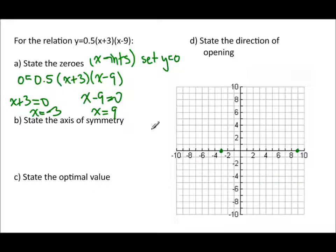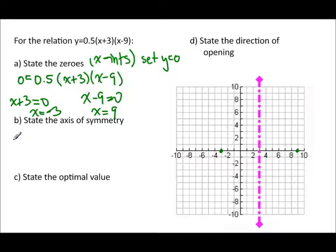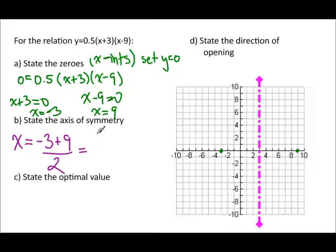Now for the axis of symmetry — the axis of symmetry is always between the two zeros. It's a vertical line right between the two zeros. We find the point between two points using the midpoint, so x equals (negative 3 plus 9) divided by 2. That gives us 6 divided by 2, which is 3. So x equals 3 is the axis of symmetry.